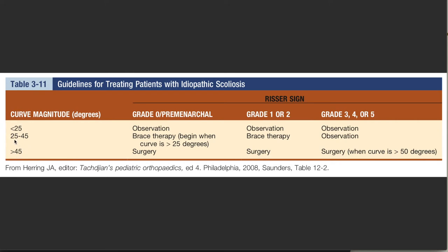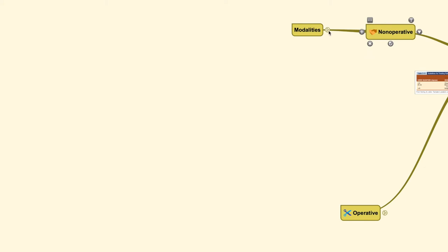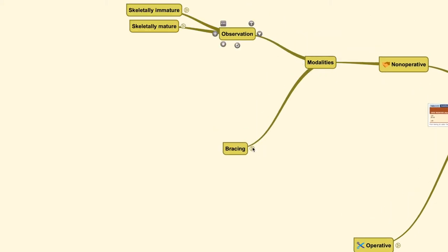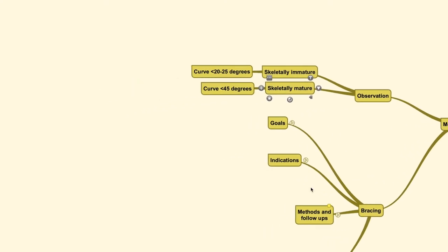For curves between 25 and 45 degrees, treatment depends on the Risser sign. If the patient has already matured to Risser grade 3, 4, or 5, observation alone is needed. But if the patient is still at grade 0, premenarchal stage, or grade 1 or 2, brace therapy is required.